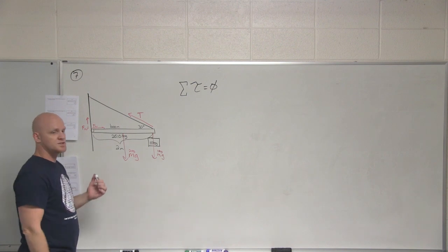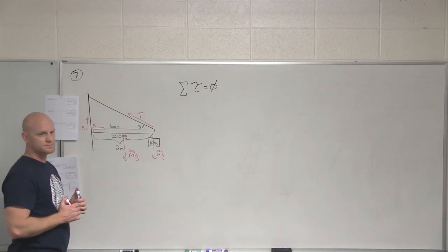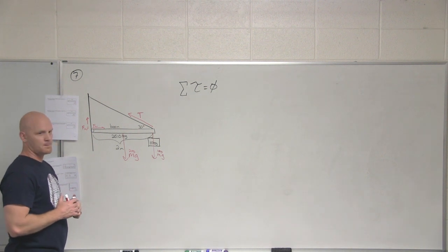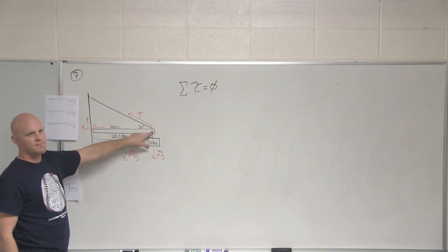Cool, so we got quite a few forces going on here. So we'll start with sum of the torques equaling zero. What do you want to make your hinge? You can choose any position you want. Should I put it... I mean, the hinge is really here. The actual rotation is really here. But what if I made it here? Would that be a good idea? Why not?